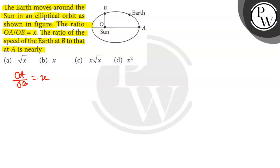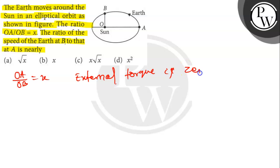The Earth and the sun are connected by the gravitational force. To find the ratio of velocities at the two points, we can use the law of conservation of angular momentum, because in this system external torque is zero.